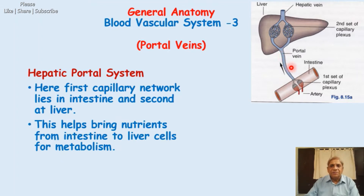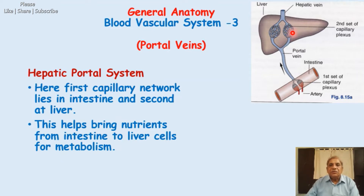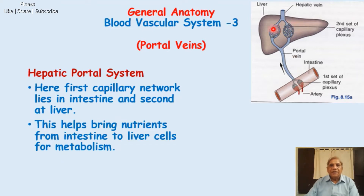There are millions of plexuses present because the intestine is very large — many feet long. This portal vein ultimately enters into the liver. From the intestine it brings the blood, and then it enters into the liver where it will again break up into the second set of the capillary plexus. This second set of capillary plexus is formed here by the veins themselves, and this venous plexus will drain the blood into the hepatic vein, which will ultimately take the blood to the heart.